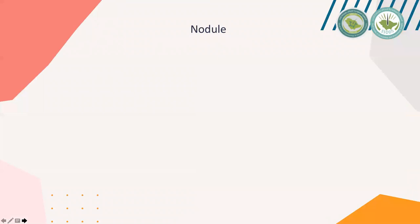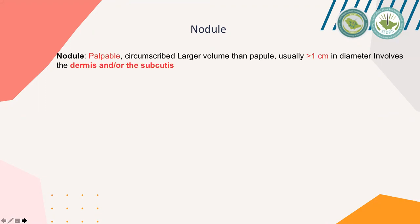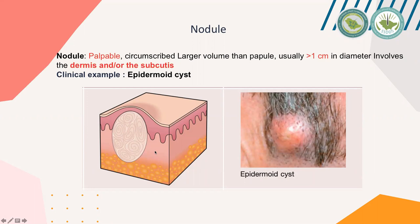Now we'll move to nodule. A nodule is a palpable skin lesion usually larger than one centimeter in diameter. It shares the same size as a plaque, but the main difference is that a nodule involves a deeper structure, like subcutaneous tissue and/or dermis, and has a larger volume. Some textbooks say a nodule has one centimeter in depth. A clinical example is an epidermoid cyst, which has larger volume and involves the dermis and subcutaneous tissue.